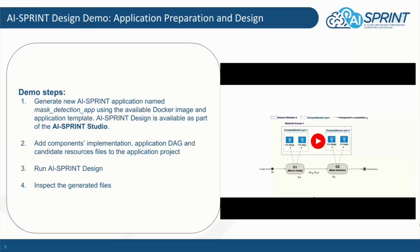Now we are going to show the demo in which we demonstrate how to use the AI Sprint design tool. In particular, in the demo we are going to generate a new AI Sprint application by using the AI Sprint Studio through the available docker image and the application template. Then we provide an example application, the mass detection application, in order to showcase how to prepare the files for the AI Sprint design. In particular, we show the component implementation, the application workflow, and the list of configuration files, among which the candidate resource files and the candidate deployment files to drive the application deployment.